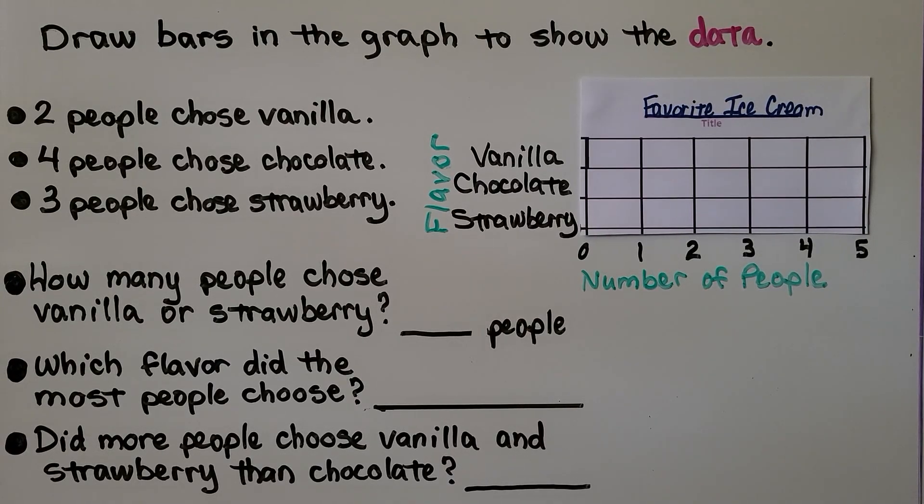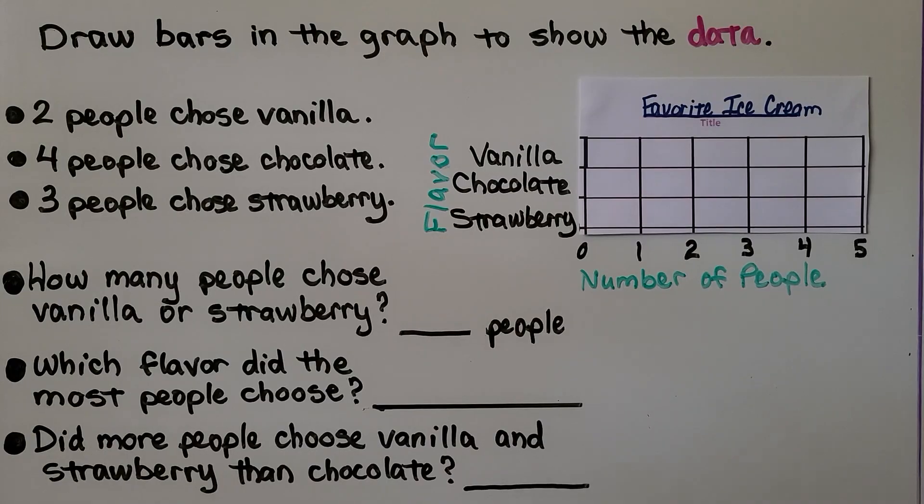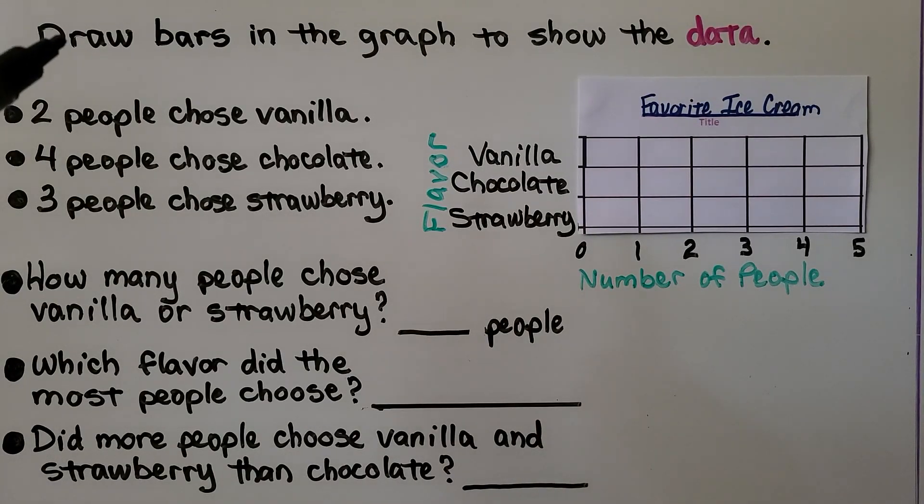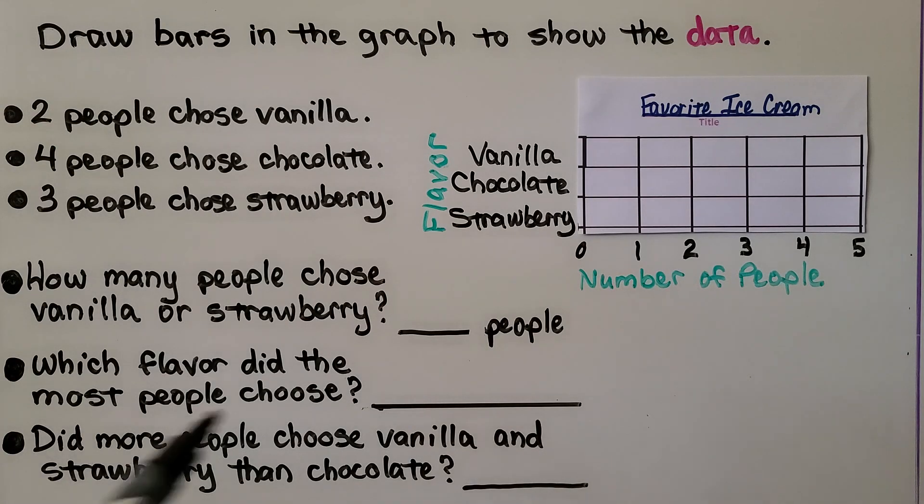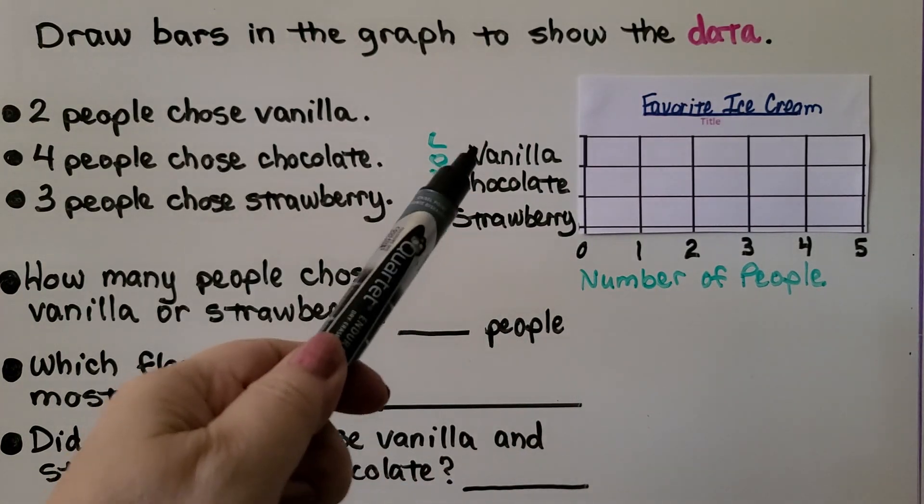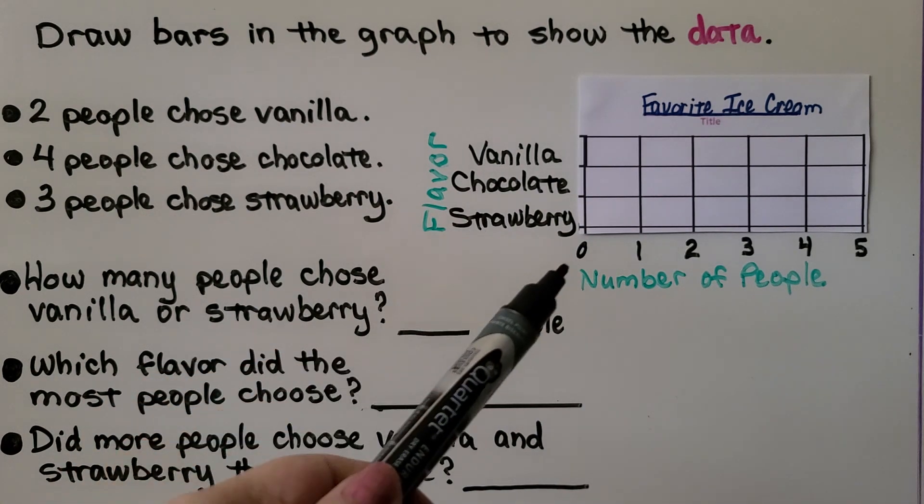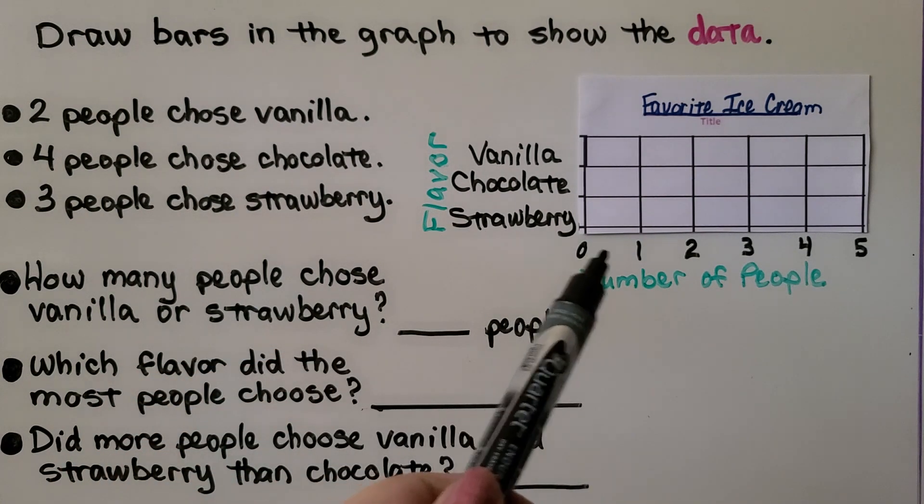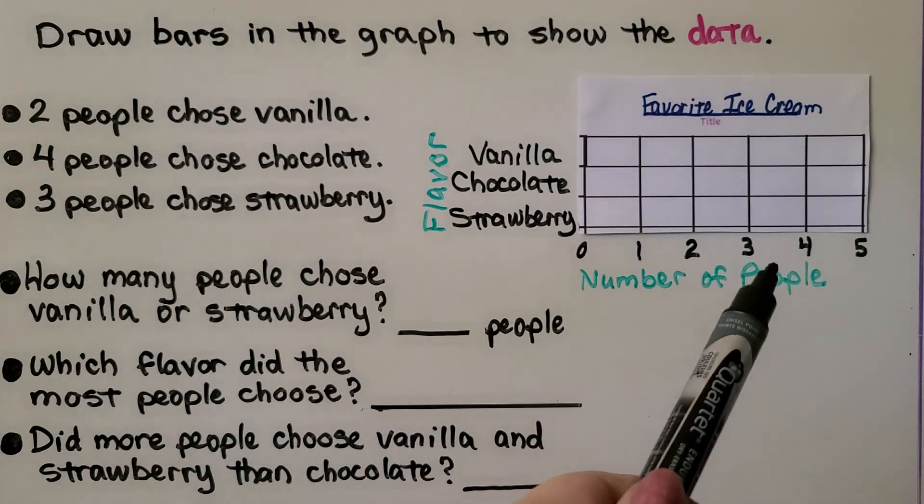We have one last example. It's telling us to draw bars in the graph to show the data. Here's the data. Two people chose vanilla. We look, it says favorite ice cream. Here's the flavors, vanilla, chocolate, strawberry. Here's the number of people and here's our scale. Now our scale is on the bottom.